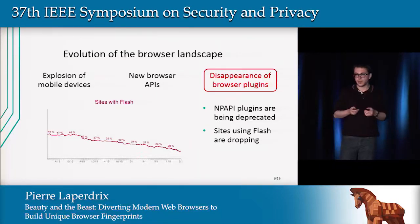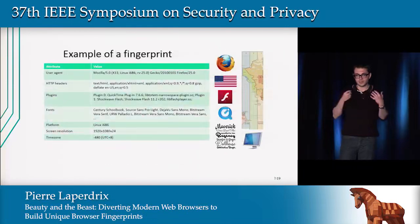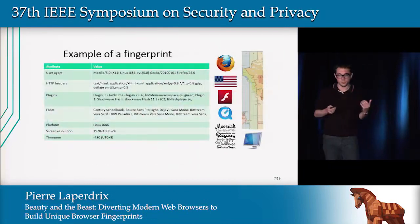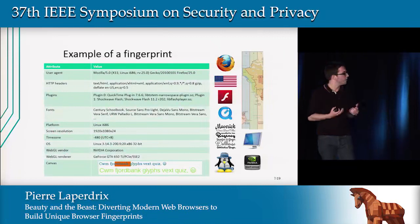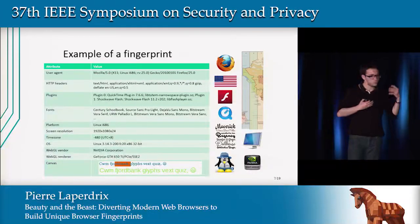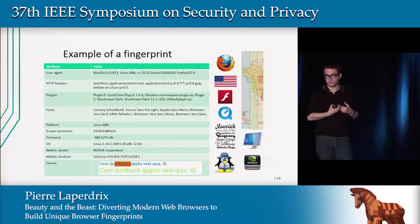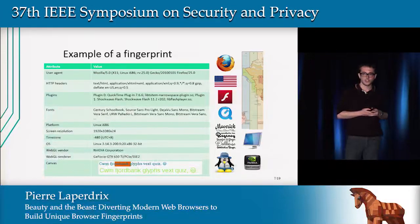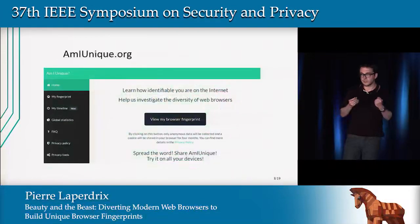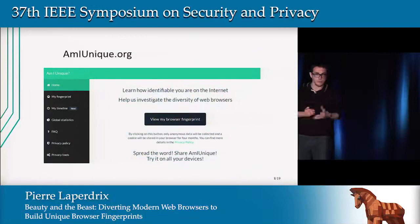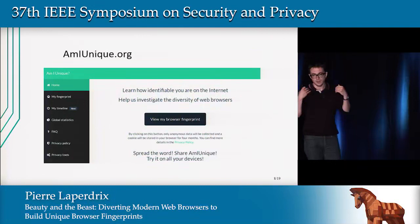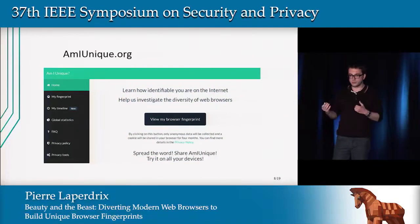To answer all these questions, we decided to take the original list of attributes and add more — new attributes from the WebGL API, ones we discovered ourselves plus those discovered by other researchers. We launched AmIUnique.org in November 2014. If you have your computer right now, you can go on it. The website collects your browser fingerprint and compares it to all the other fingerprints that were collected before.